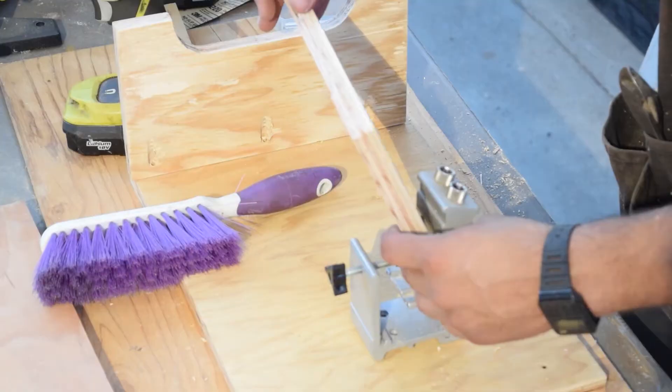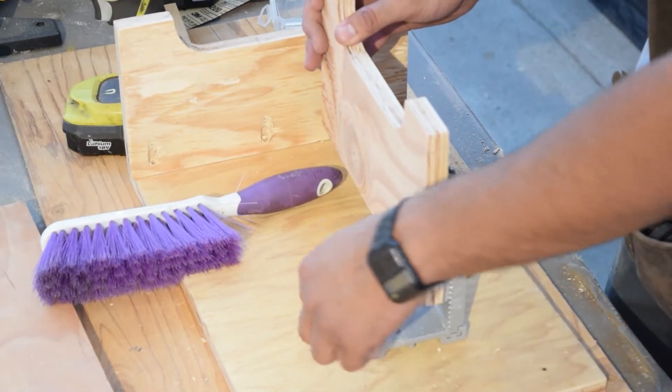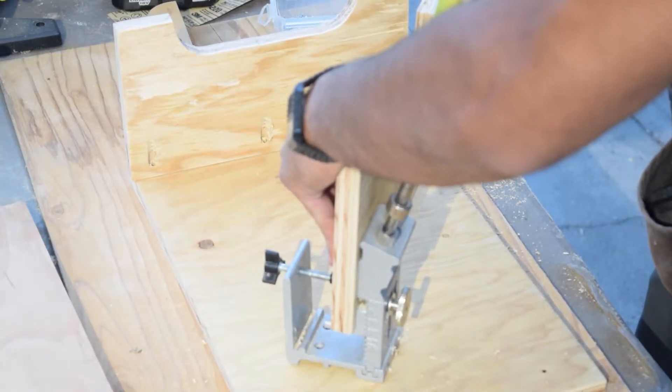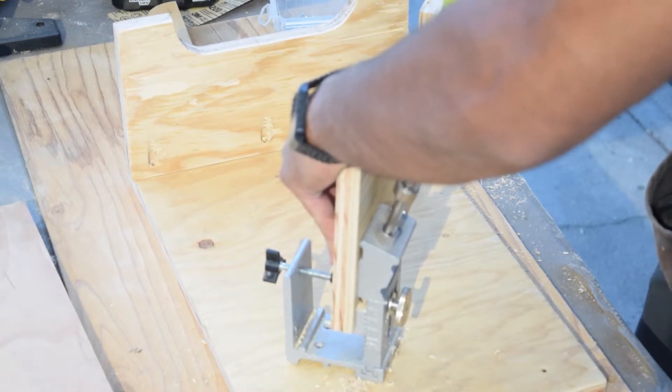This pocket hole jig is very useful when it comes to joining two pieces of wood together. It made this project more efficient. It will also be linked in the description.